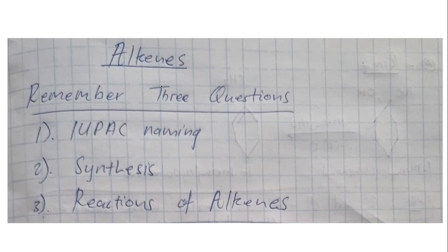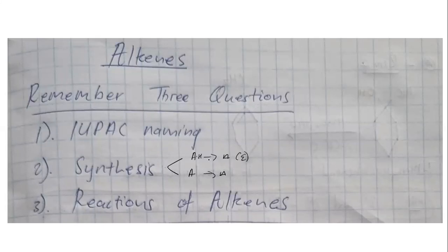Let's do a continuation of where we left off. We already covered Part 2, where we spoke about the synthesis of alkenes — how to form alkenes. We talked about two reactions: the alkyl halide gives us an alkene, and the alcohol also gives us an alkene. For the alkyl halide, we spoke about elimination using a base that dissociates into ions, and those nucleophilic ions interact with the alkyl halide to form an alkene. We also spoke about substitution, where nucleophiles substitute the halogen from the alkyl halide to form an alcohol.